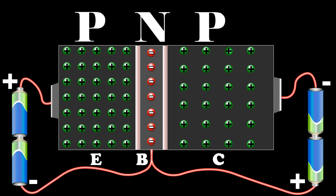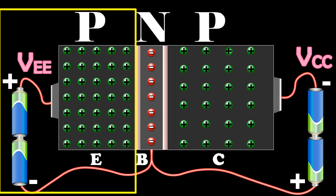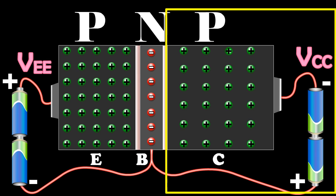The external biasing of the junction is provided by the batteries VEE and VCC as shown in the diagram. The emitter-base junction is forward biased and the collector-base junction is reverse biased.